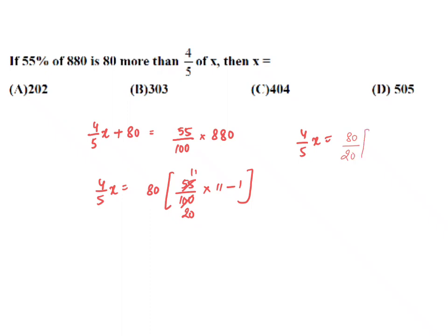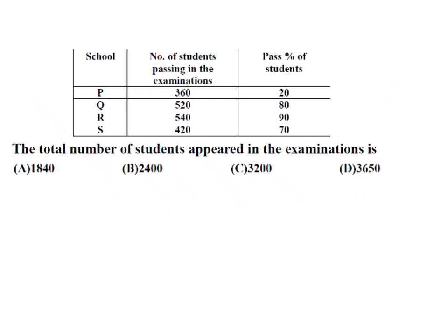So you are getting 4/5th of x equals 80. Take 20 common in the denominator. 121 minus 20 will be 101, so 1 is up. 4 is up, 20 is up. 20 and 20 cancel. x equals 101 into 5, which is 505. The answer is 505.